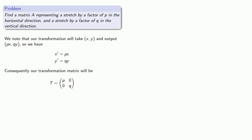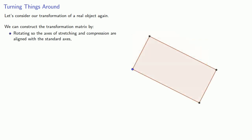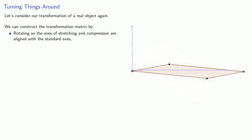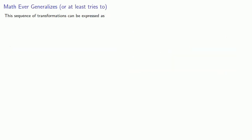Let's consider our transformation of a real object again. We can construct the transformation by rotating so the axes of stretching and compression are aligned with our standard axes, stretching along our standard axes, and then rotating back. This sequence of transformations can be expressed as A being R_{-θ} λ R_θ, where R_θ is the matrix corresponding to a rotation of θ, and λ is a diagonal matrix.